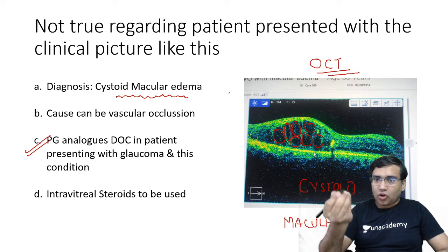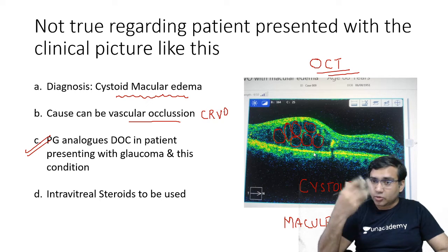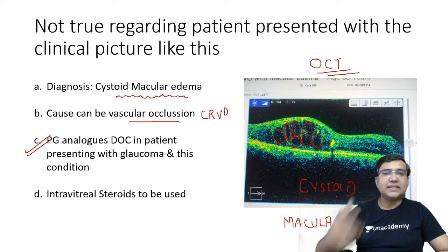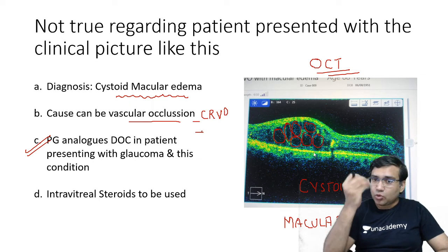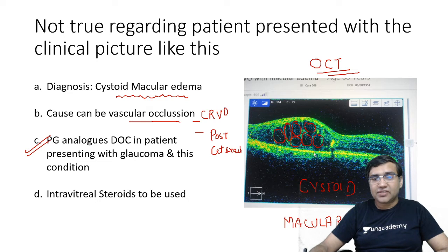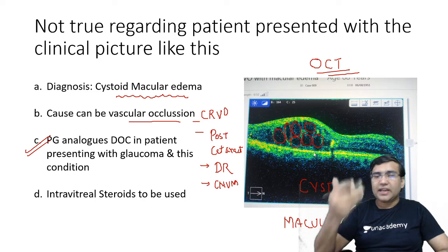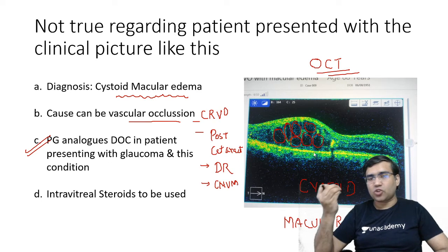Causes of cystoid macular edema include vascular occlusion like CRVO (also central retinal artery occlusion, but more commonly CRVO), post-intraocular surgery such as post-cataract surgery — which is the most common cause in India — diabetic retinopathy, and choroidal neovascular membrane. These are the main etiological categories to remember.